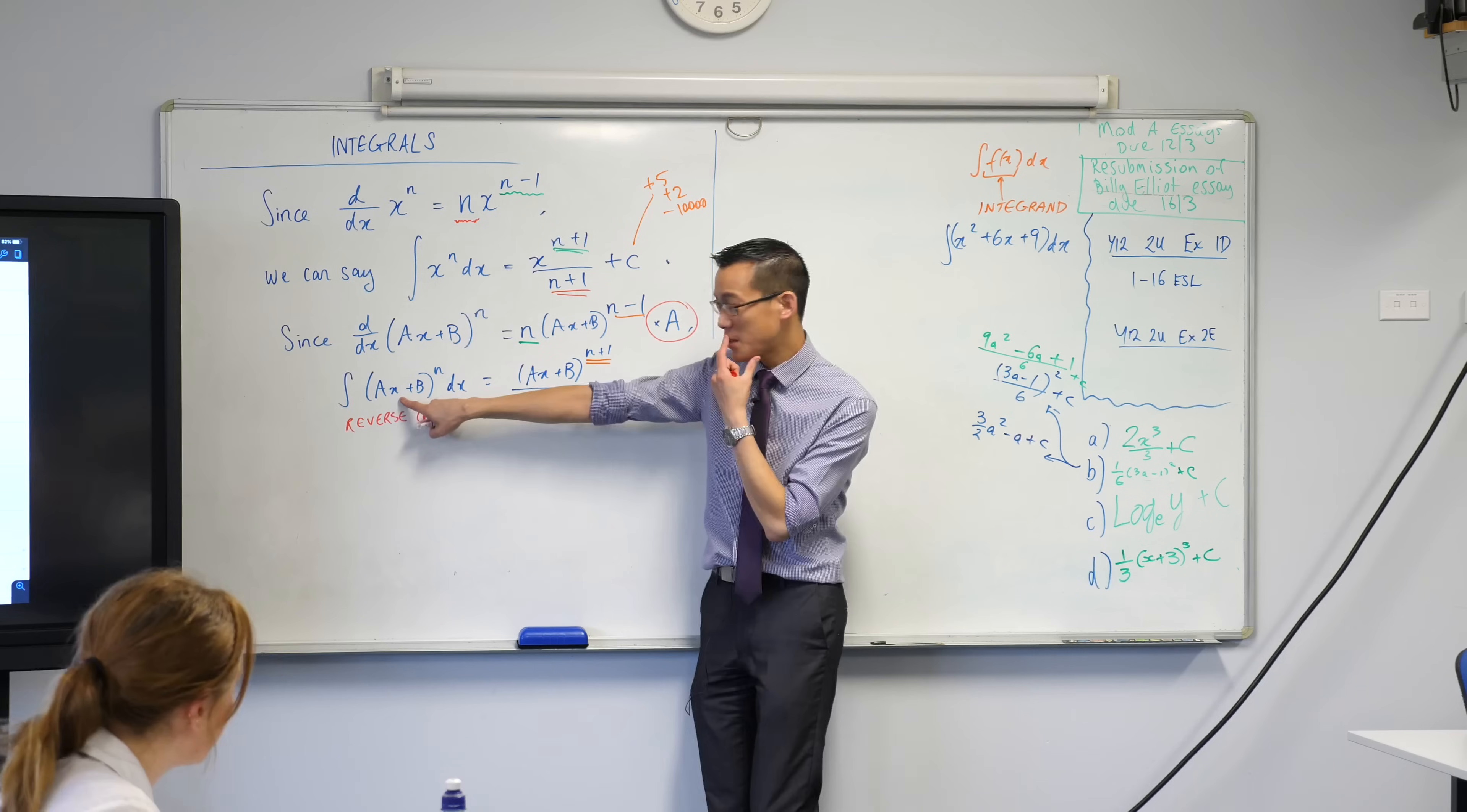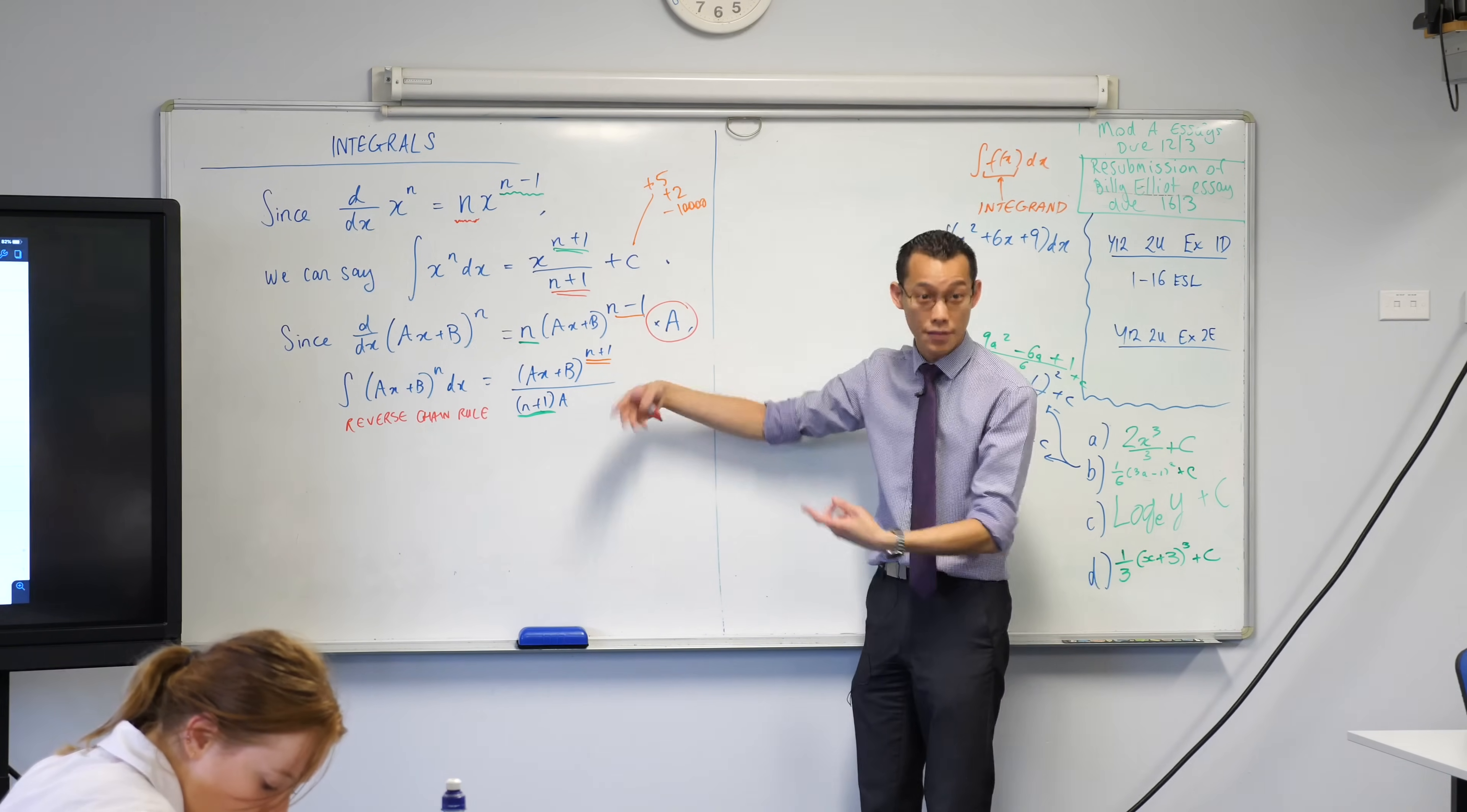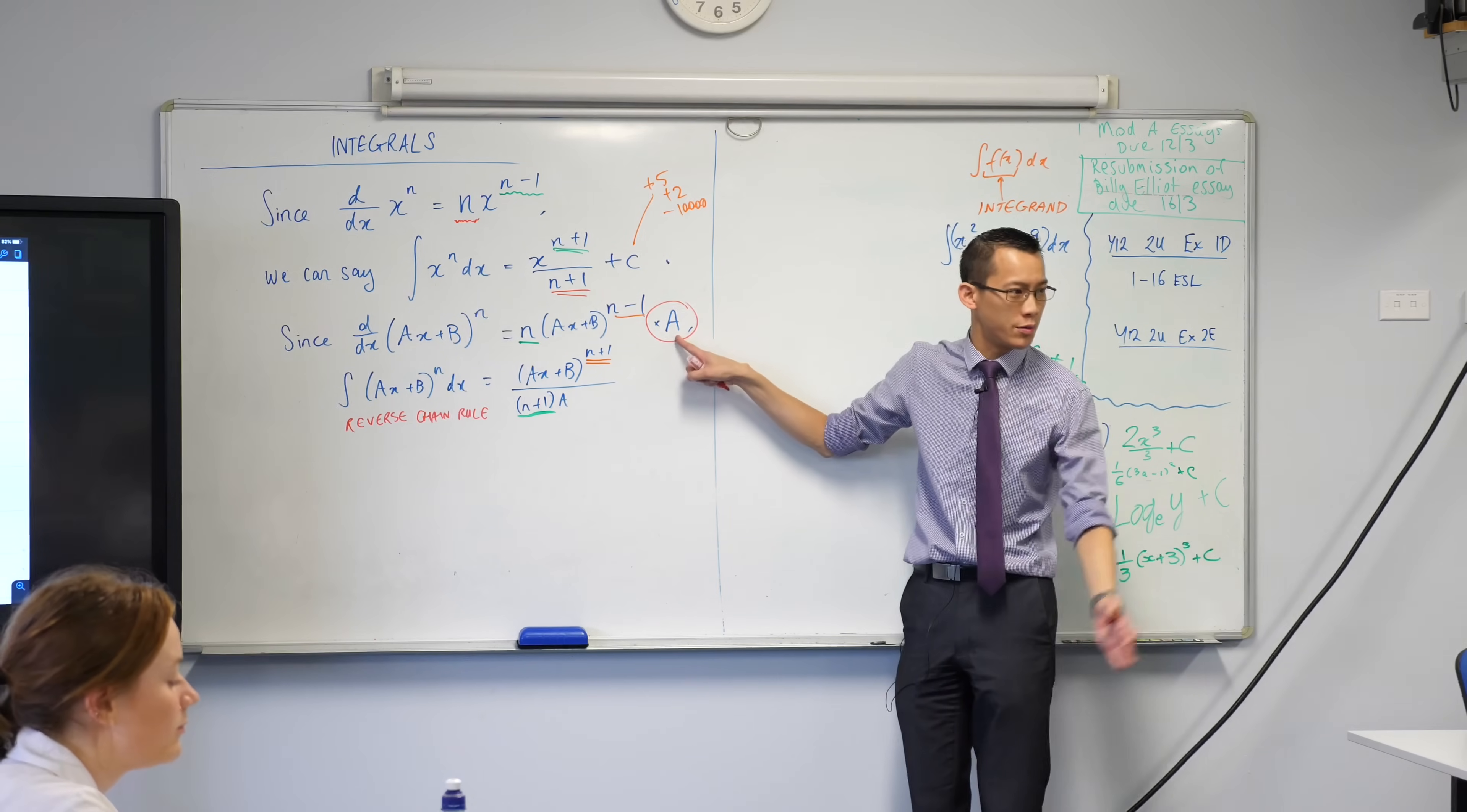So what's the inside derivative here? So instead of times, we're dividing. Exactly. We're dividing by a to counteract our multiplication by a. We would have done it with a derivative. Yeah?